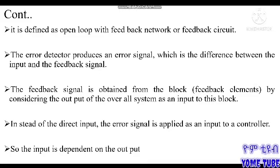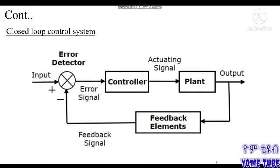This is the definition of closed loop. This is defined as open loop with feedback network or feedback circuit. Open loop is defined as a feedback network. The output is defined as a physical parameter. The closed loop is defined as a network. The controller is defined as a signal.